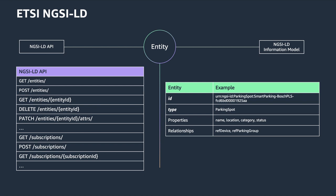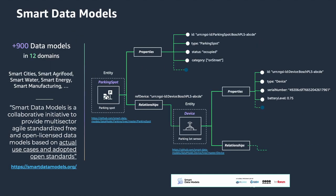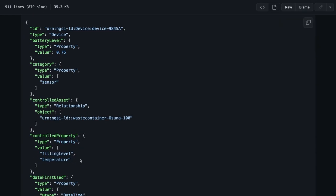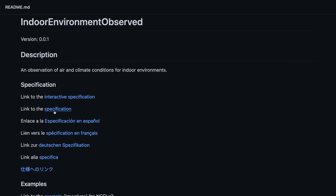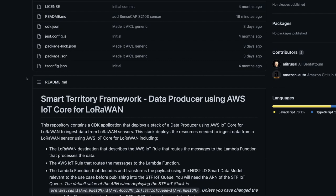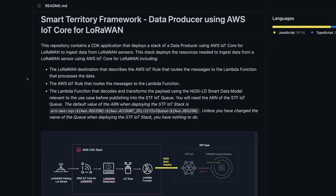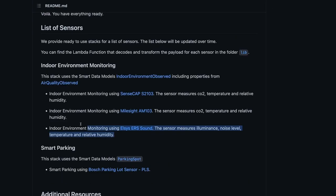Every information stored in the STF is an NGSI-LD entity. The STF leverages the NGSI-LD compliant smart data models initiative that provides open licensed data models for different domains, such as smart cities, smart building and smart manufacturing. Each device registered in the STF IoT registry is described using the smart data model named 'device.' For the measurements of our sensors, we will use the data model 'indoor environment observed.' We provide in a GitHub repository the code of a stack to deploy an STF data producer using AWS IoT Core for LoRaWAN, including samples for multiple types of sensors. So let's clone it.